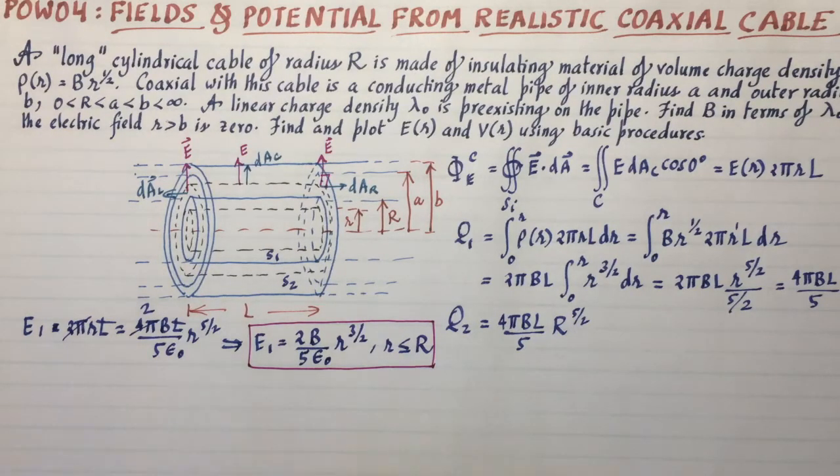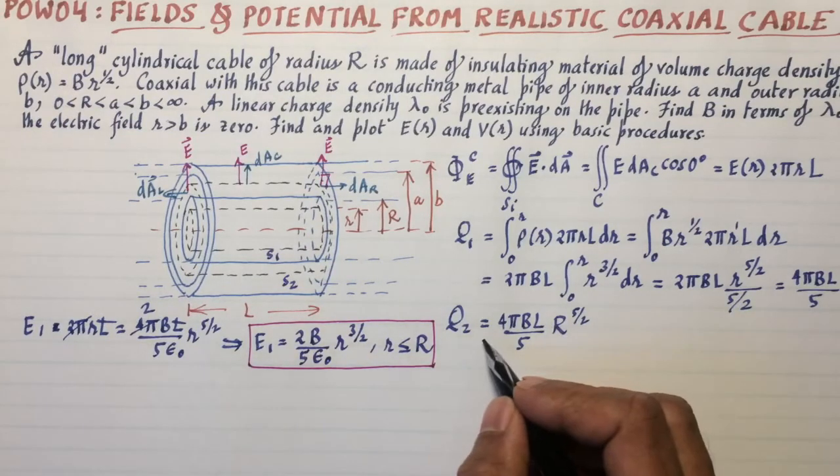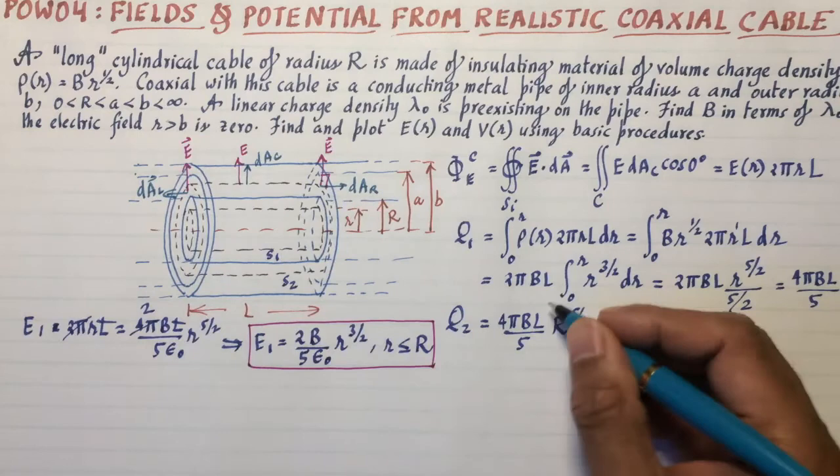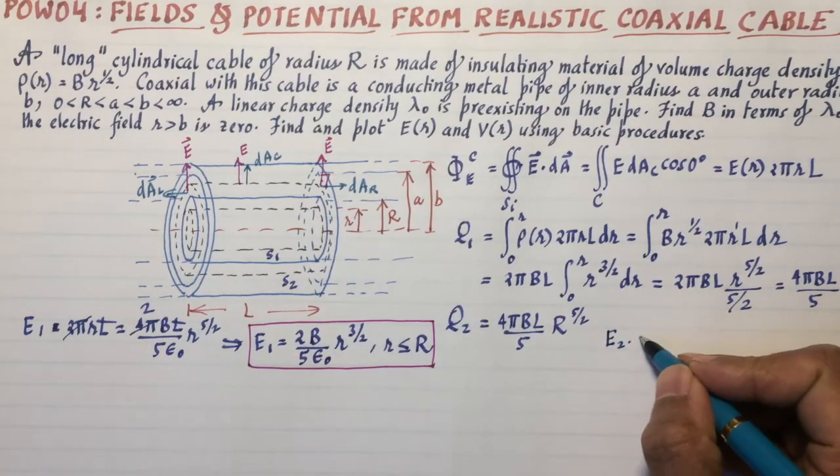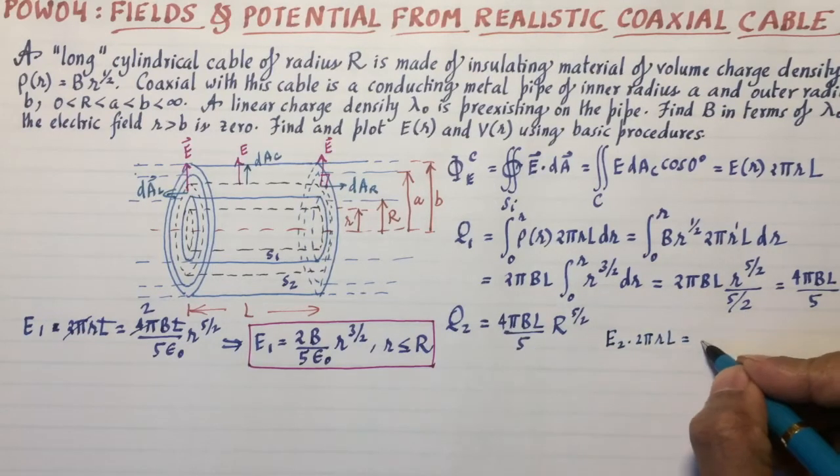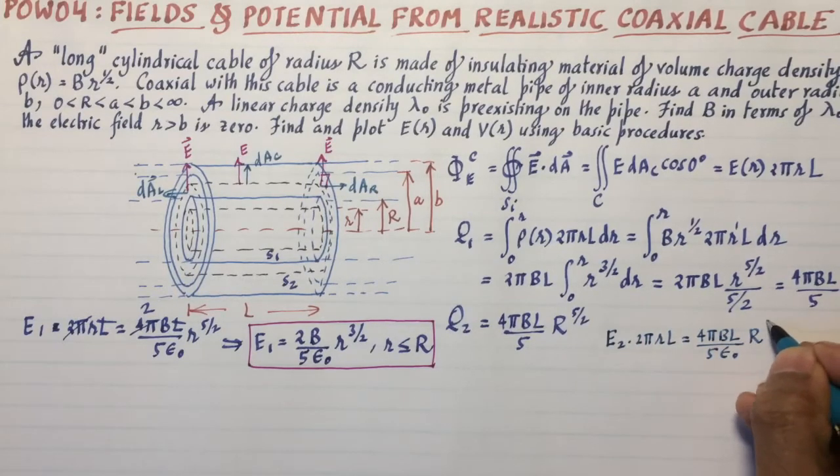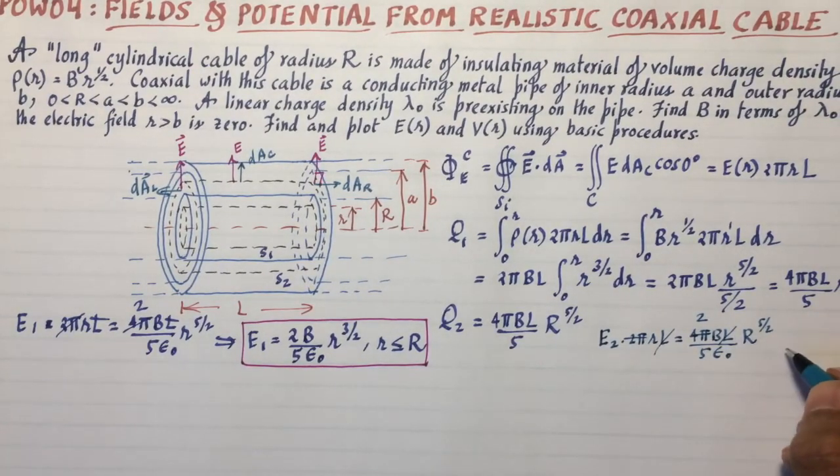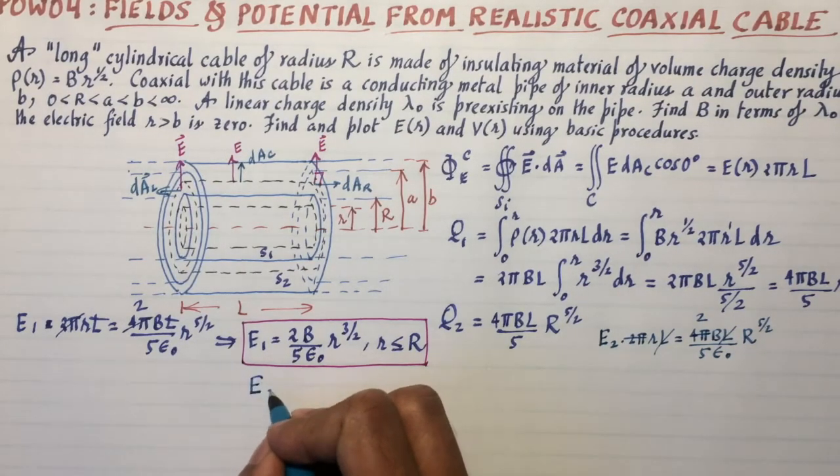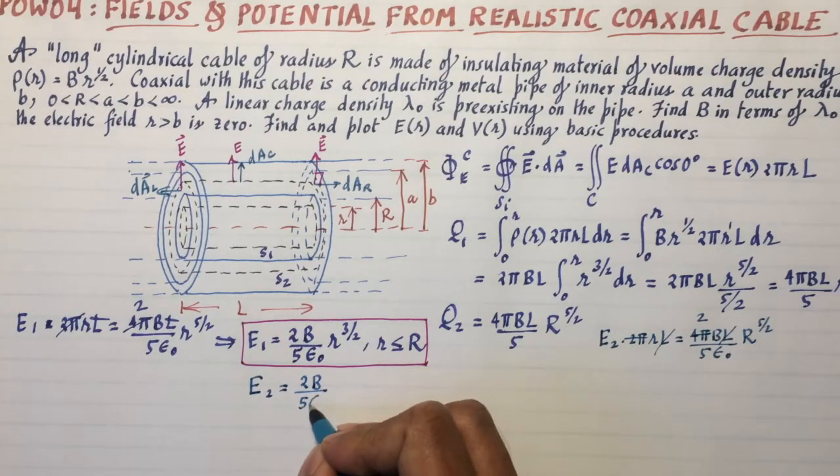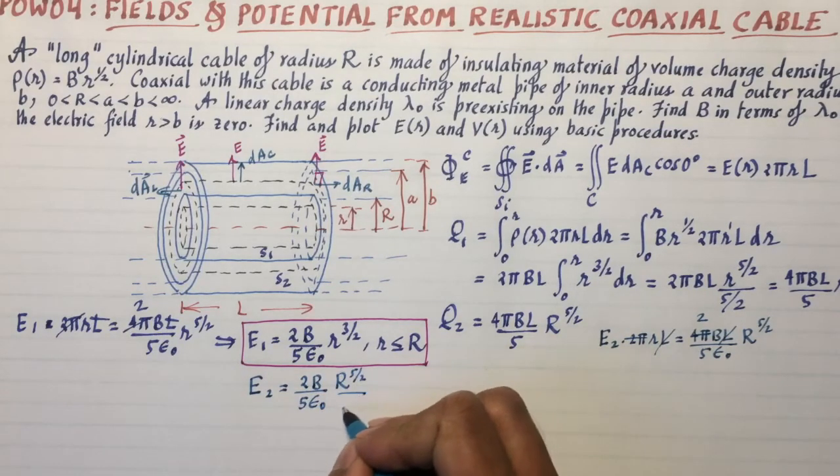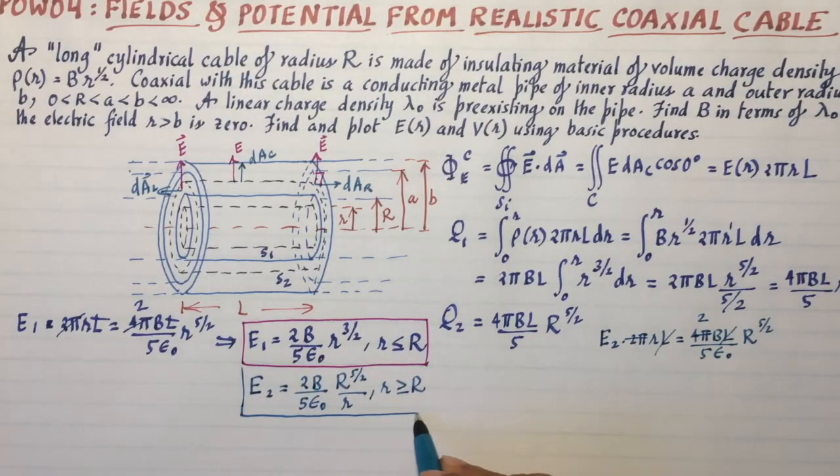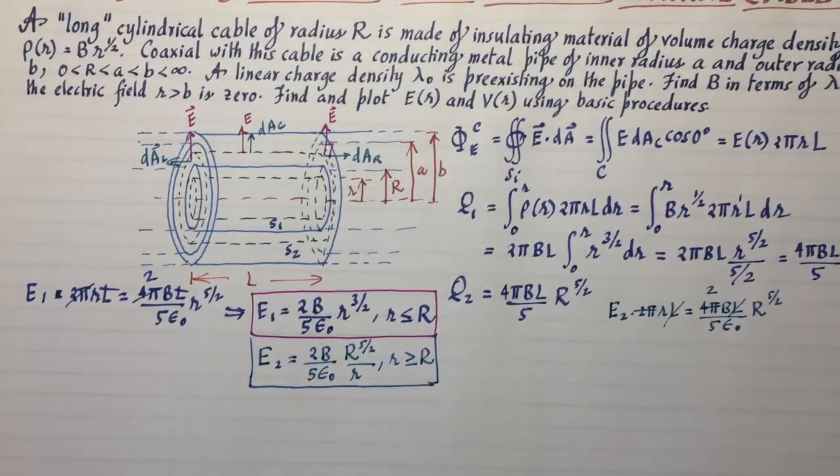The electric field E1, the electric field in the region E1, that's going to be given by, well, the left-hand side is E(r) times 2πrL. So E1 times 2πrL equals the charge enclosed q1 over ε₀. So that's 4πBL/5 r^(5/2) over ε₀. Some things cancel out here. That's a 2, the L's cancel out as they always will. So I'm left with the electric field E1 equals, if I take the r over to the other side in the denominator, I'm going to get 3/2 for r. So it's 2B/(5ε₀r^(3/2)) for r less than or equal to capital R.